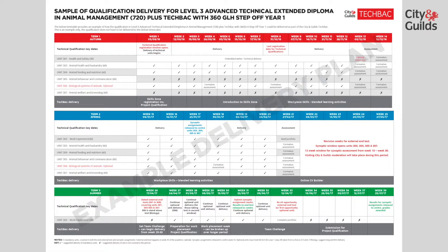In Term 2, learners continue with the mandatory content as well as the optional unit. They will also compile, or start to compile, the work experience. The synoptic assignment that covers the remaining mandatory content — not the Biology — is released in week 18. Learners will then have the opportunity to research and gather evidence and produce work ready for the assignment to be completed under controlled conditions.